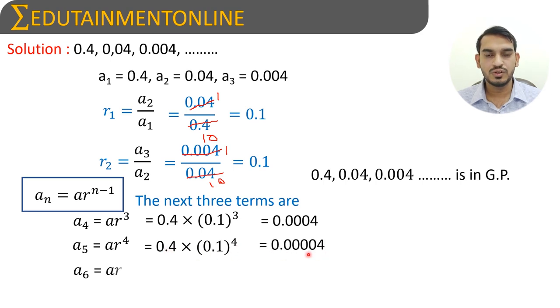The sixth term, a₆, equals a × r⁵, so 0.4 × 0.1⁵. Simplifying this, we get 0.000004.